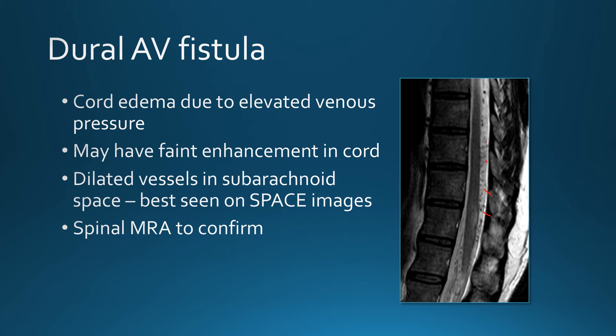Spinal MRA can be done either as a time-resolved TWIST sequence or as a standard contrast-enhanced MRA similar to carotid MRA technique. The time-resolved approach is becoming more popular and usually makes the dilated veins easier to see. For definitive evaluation, the patient needs a conventional spinal angiogram.